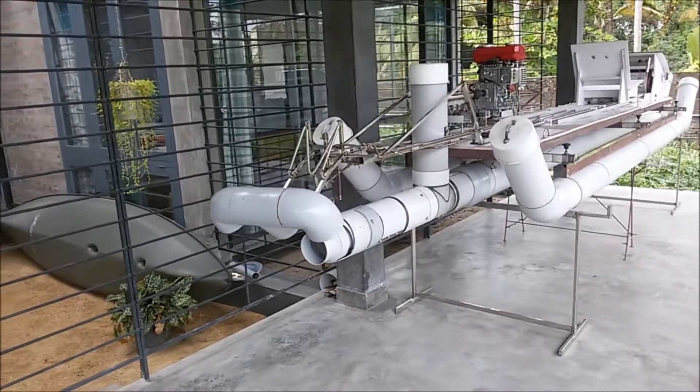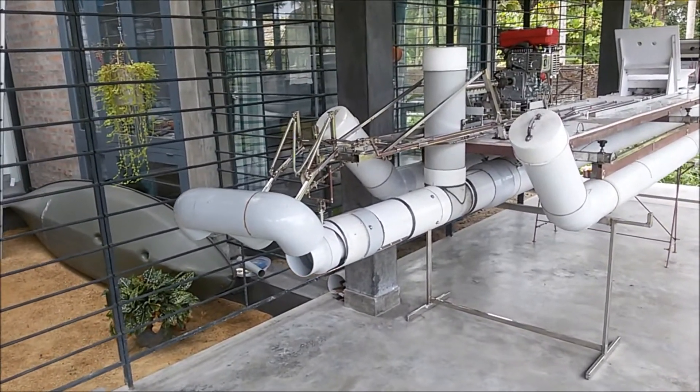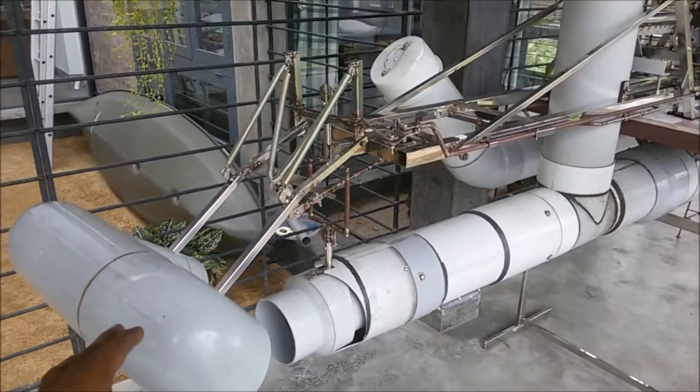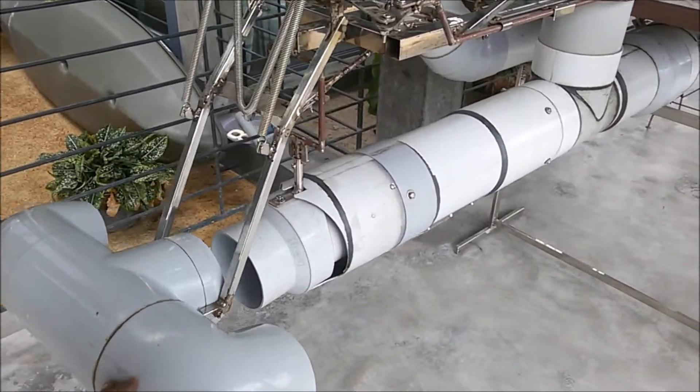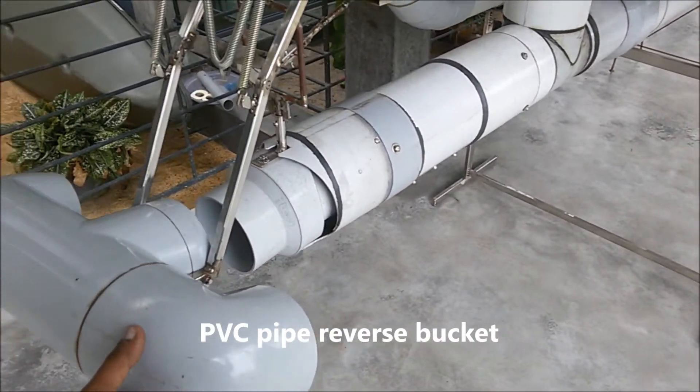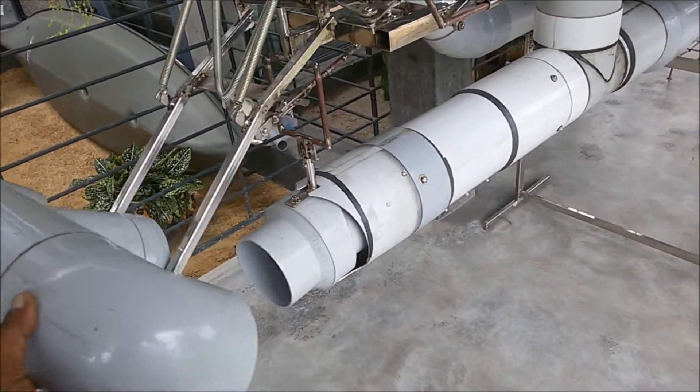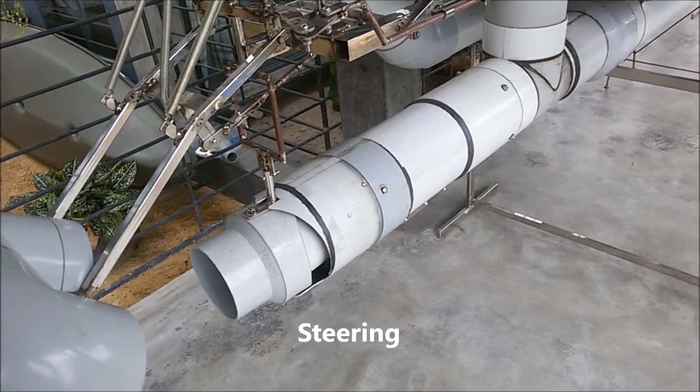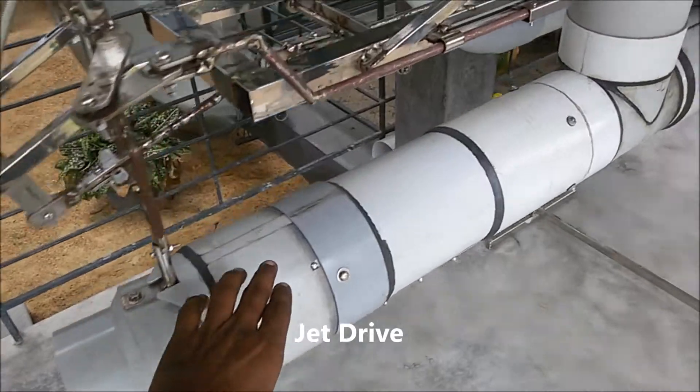Starting with the stern, as you can see, it has the reverse bucket. The jet drive is the reverse bucket, which goes and closes this jet nozzle and it can be turned. This is the jet drive.